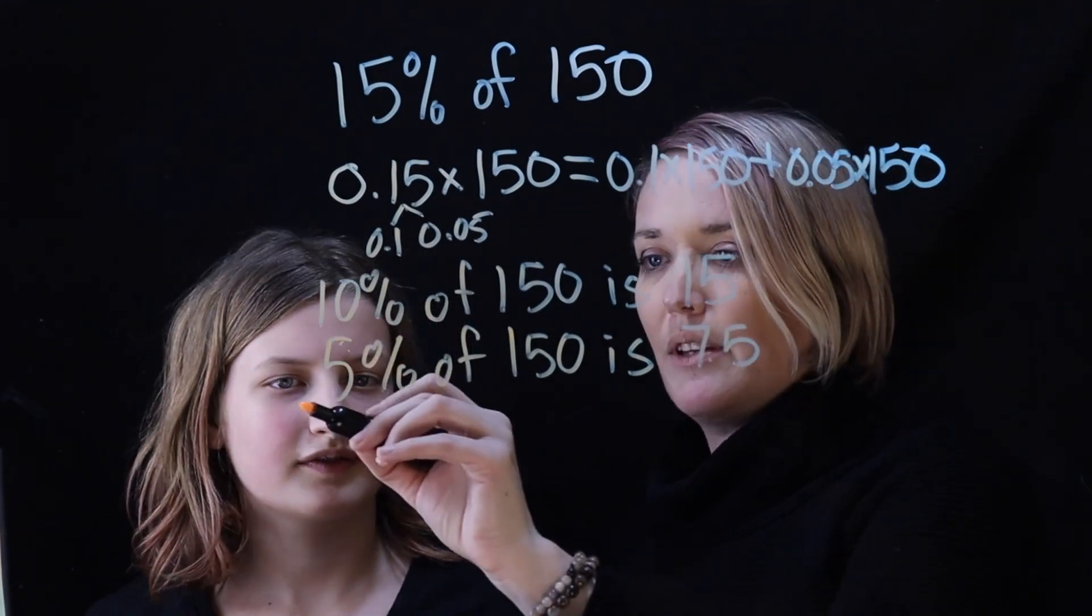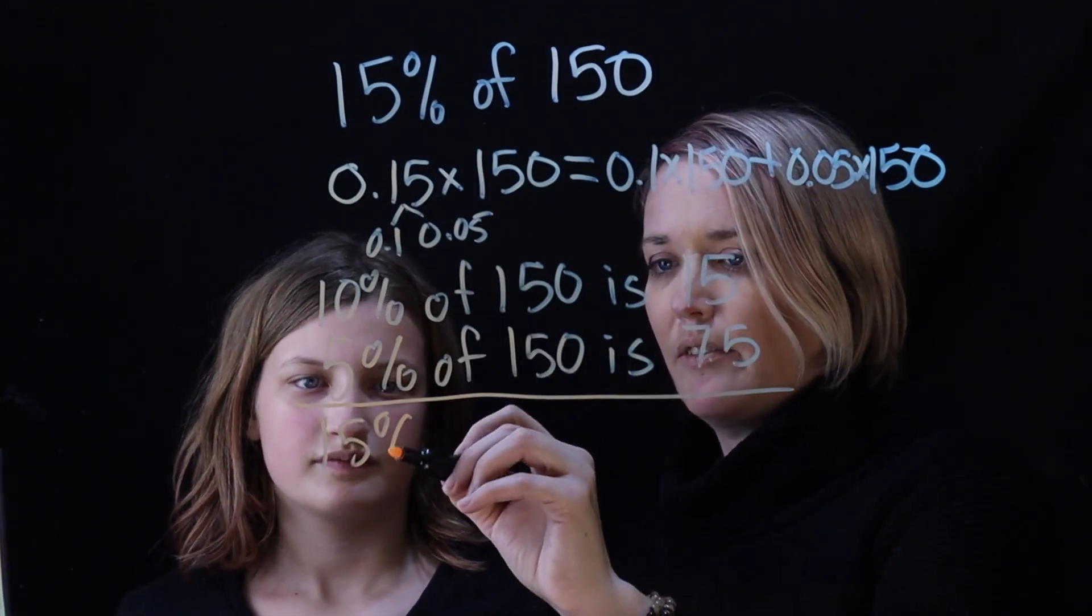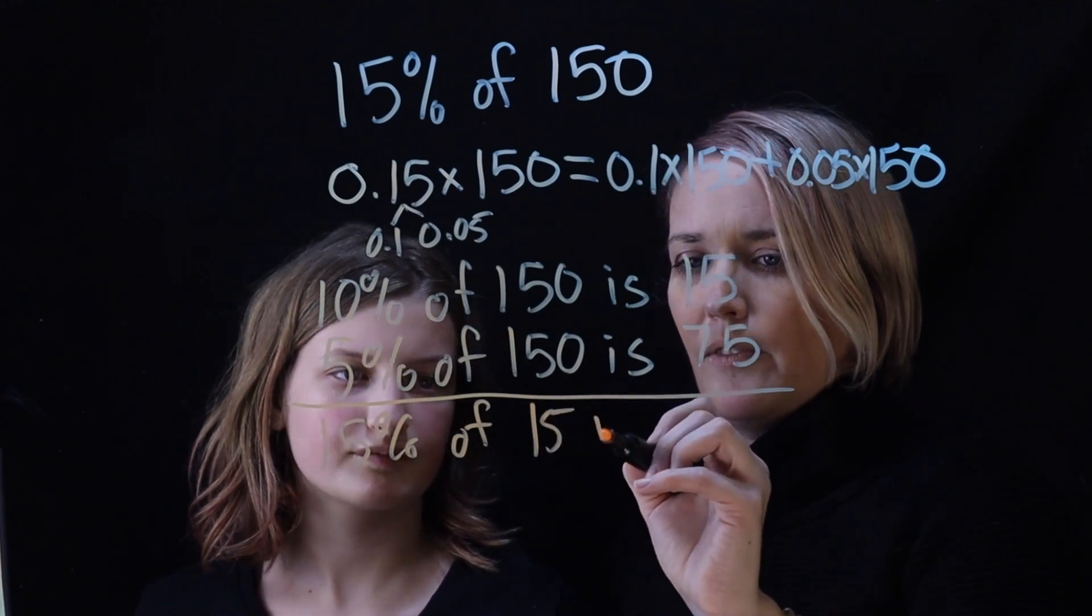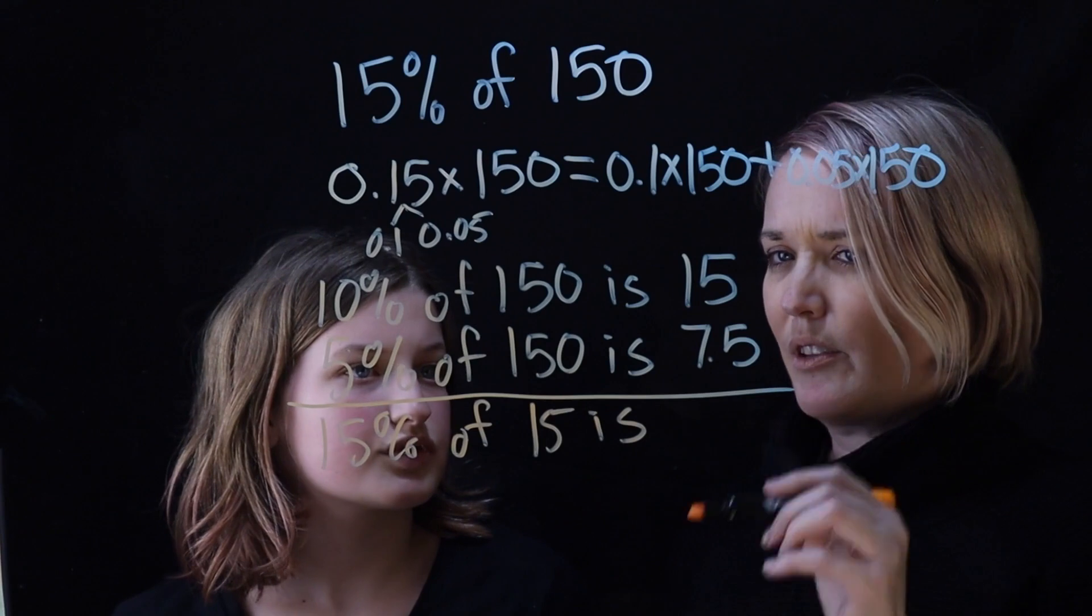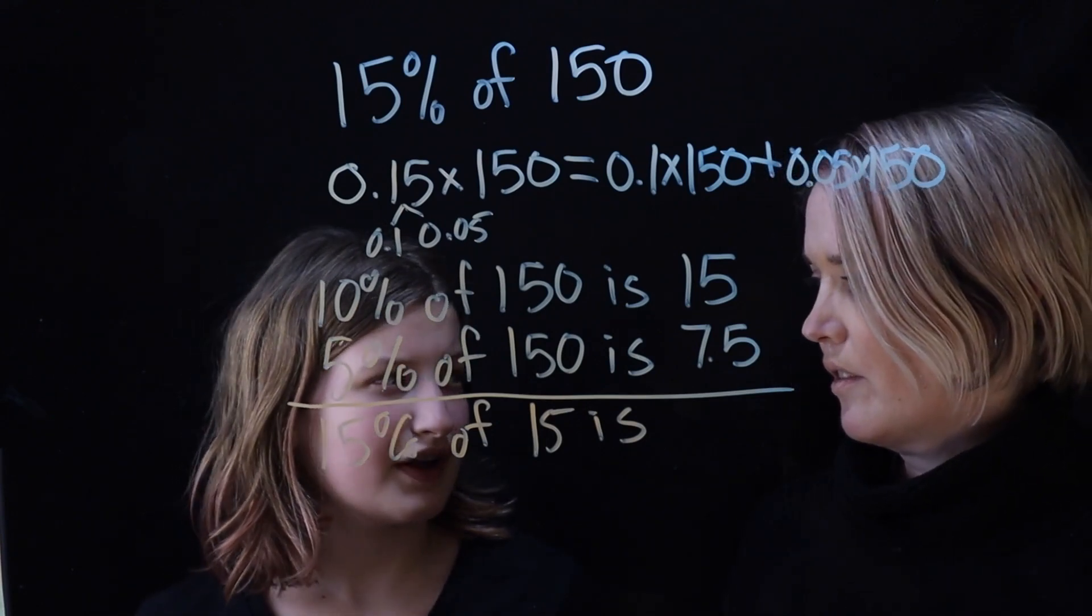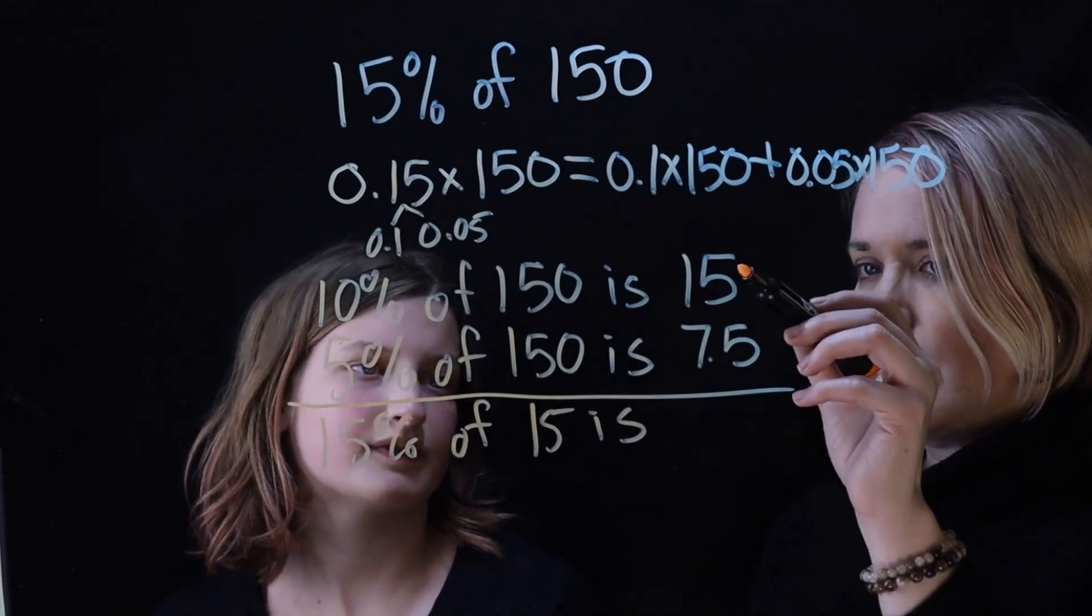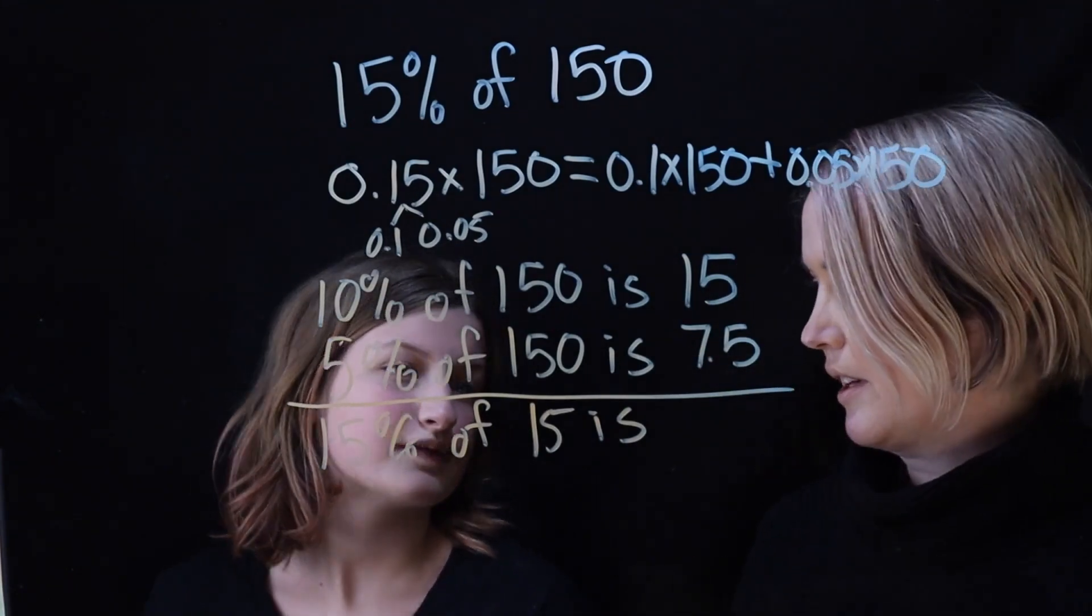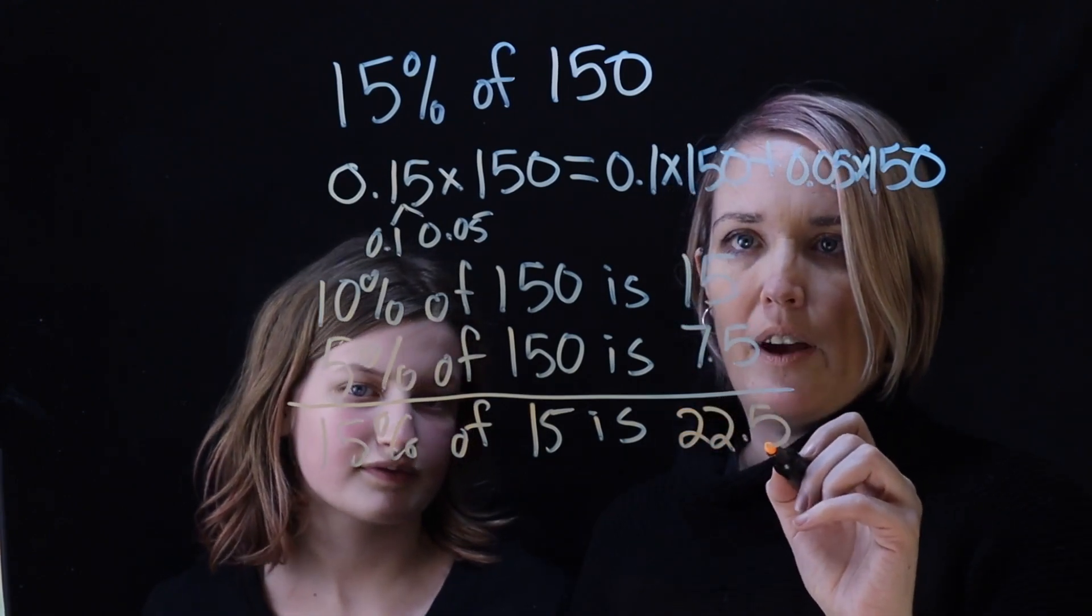Okay, so let's add these things up then together. So 15 percent, because 10 plus 5, of 150 is - what is this added together? 22.5. It is 22.5. Does it help to think of money for this? Like $15 plus $7.50? It does.